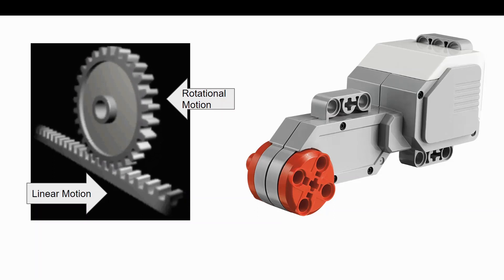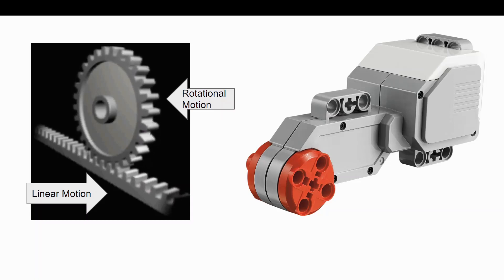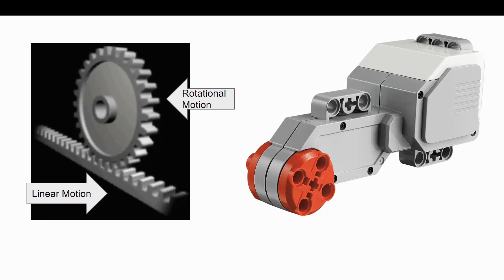In FIRST LEGO League, rack and pinions are extremely useful because motors give rotational motion, and some missions can only be completed with linear motion.